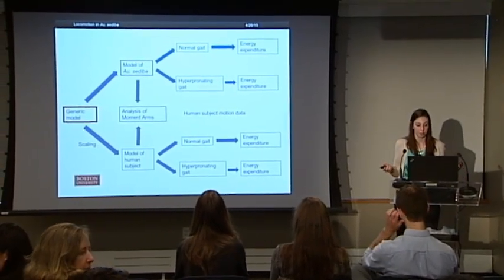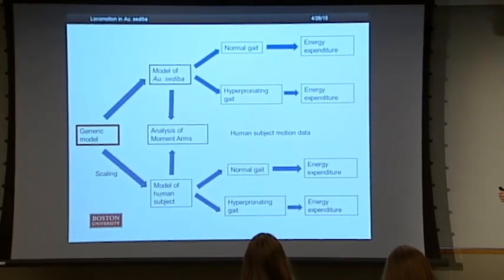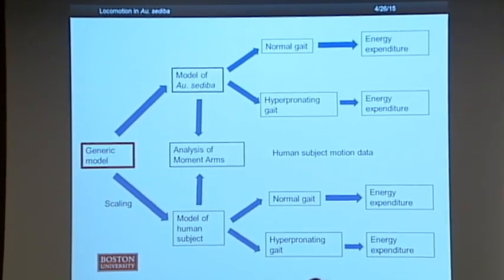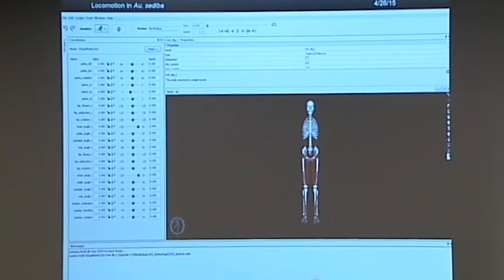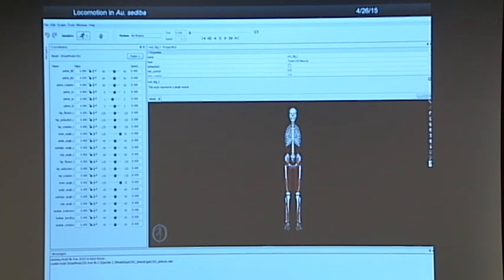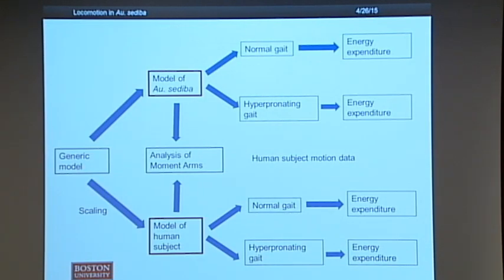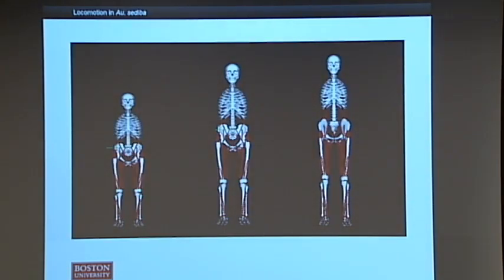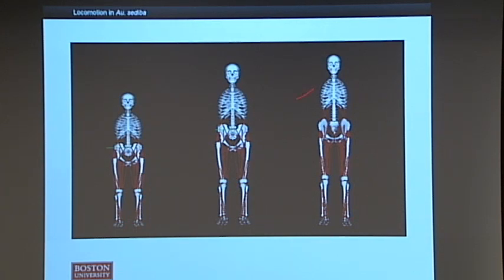Let's get into the actual methodology. I have a flow chart of all the steps I took to create and analyze this model. I started with a generic model using a program called OpenSim, which is primarily used by orthopedic surgeons and physical therapists. I created two models: one is a model of Australopithecus sediba, and the second is a model of a specific human subject. Sediba was only about four feet tall, so we also created a scaled-up version of her model to approximate human size, keeping the same proportions.